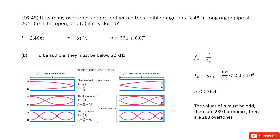The second part: if this pipe is closed. If this pipe is closed, we look at the picture. The fundamental frequency F1 is V over 4L. We can see F3 is 3 times F1, and F5 is 5 times F1. So the N harmonic frequency Fn is N times F1. Input F1 inside, we get this equation.